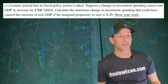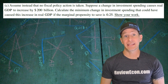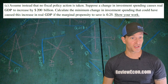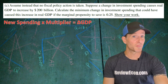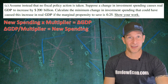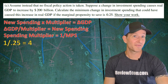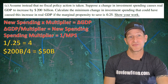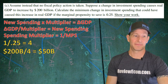For part C, we assume no fiscal policy action, and instead a change in investment spending causes real GDP to increase by $200 billion. We need to calculate the minimum change in investment spending that could have caused this, given that the marginal propensity to save is 0.25. New spending times the multiplier equals the change in real GDP, so we rearrange: change in real GDP divided by the multiplier equals new spending. The spending multiplier is 1 divided by 0.25, which equals 4. Then $200 billion divided by 4 equals $50 billion of initial change in investment. If you show that work, you get the point.